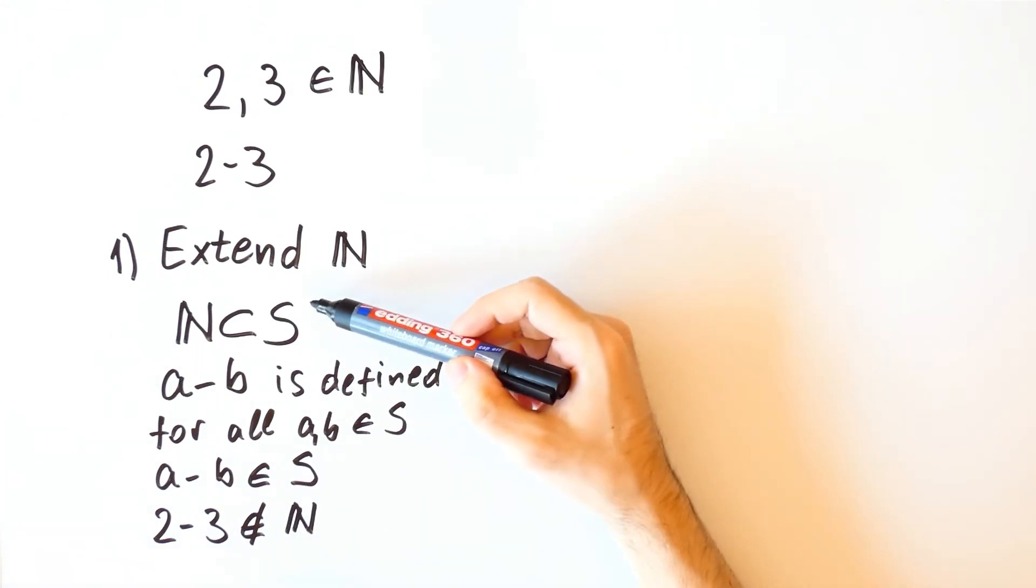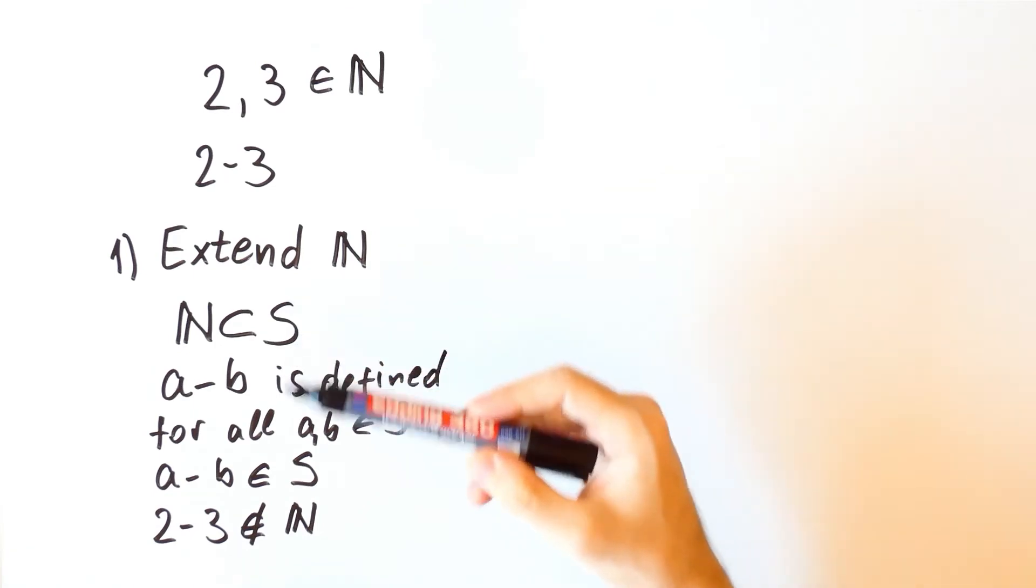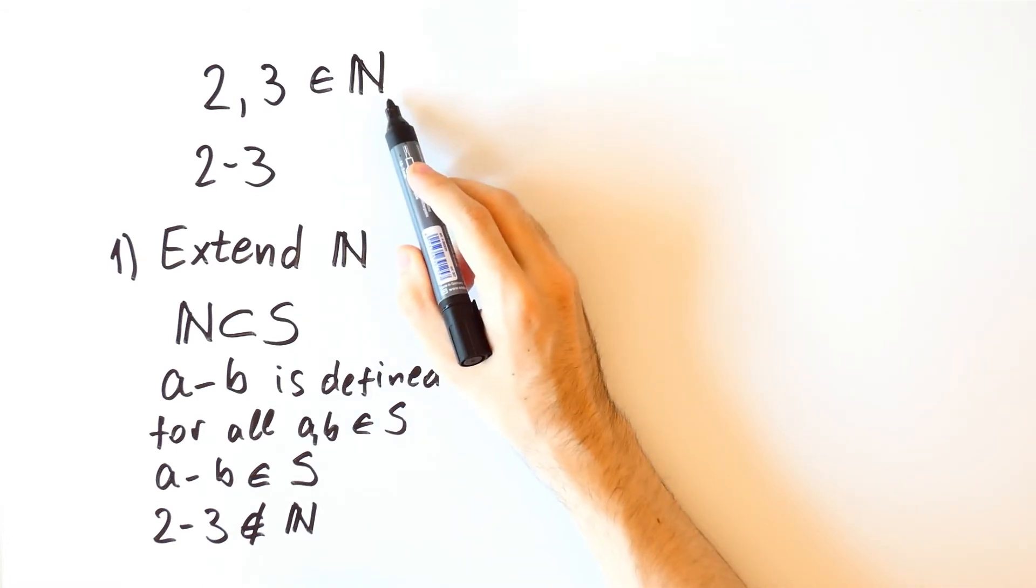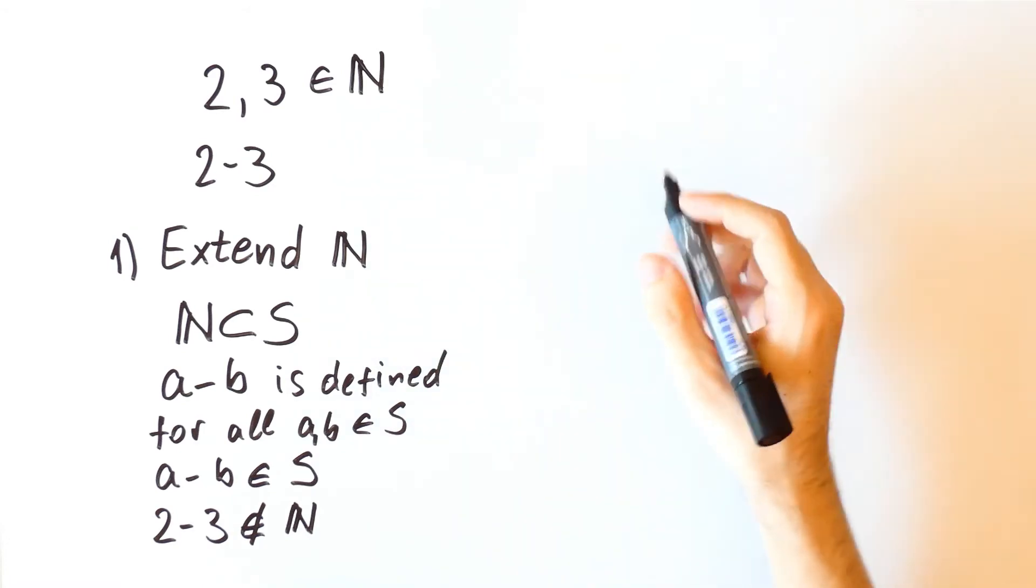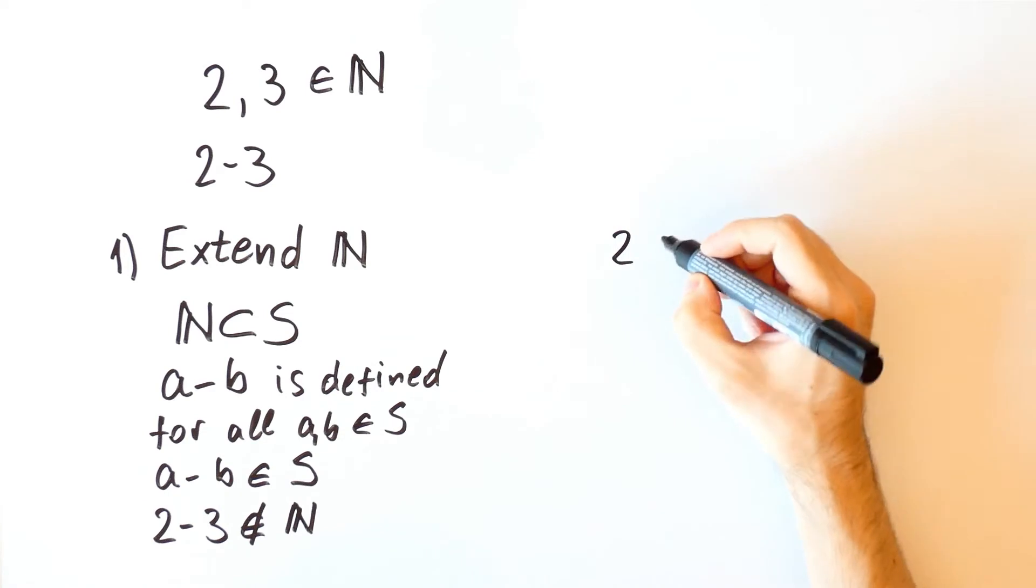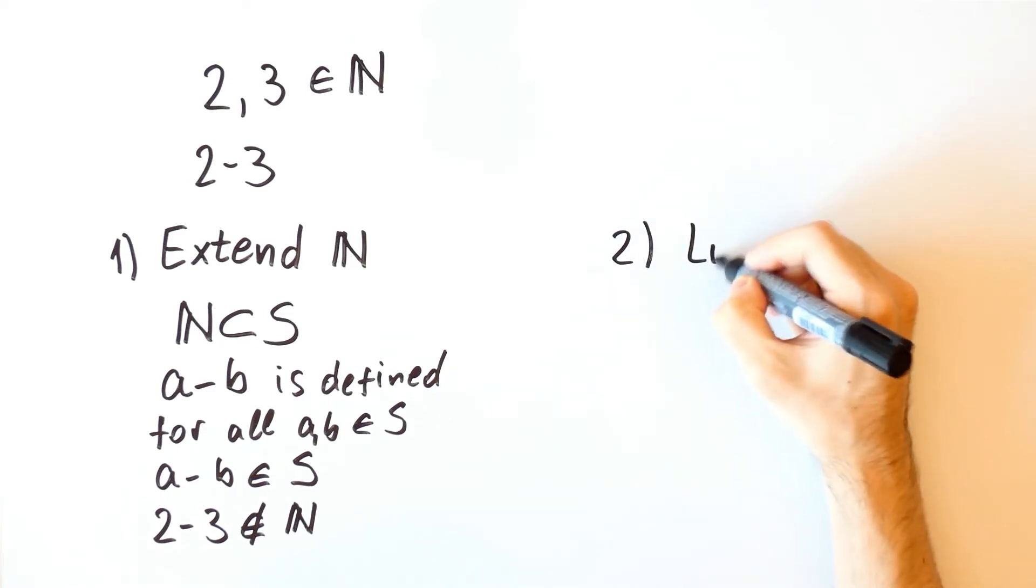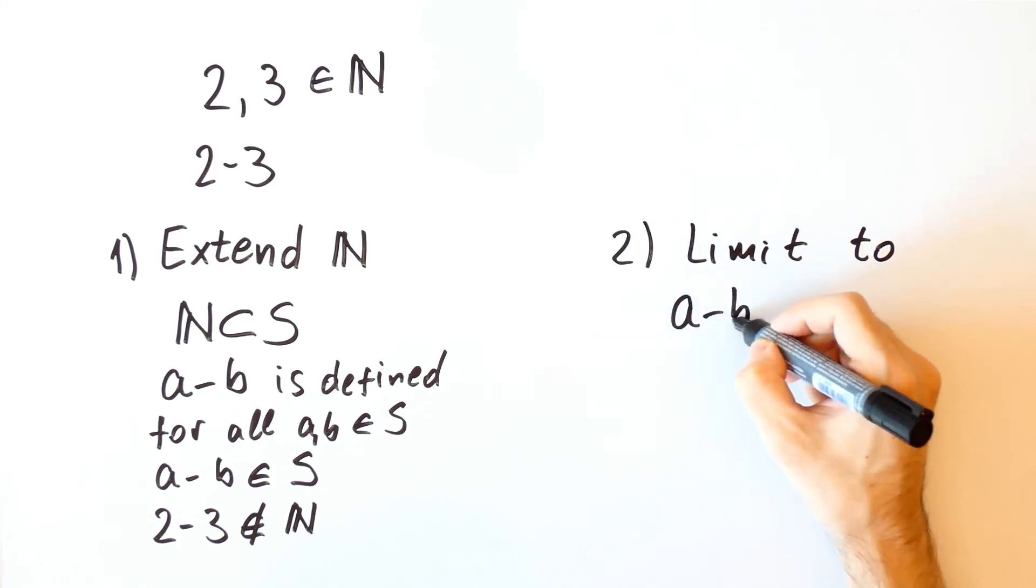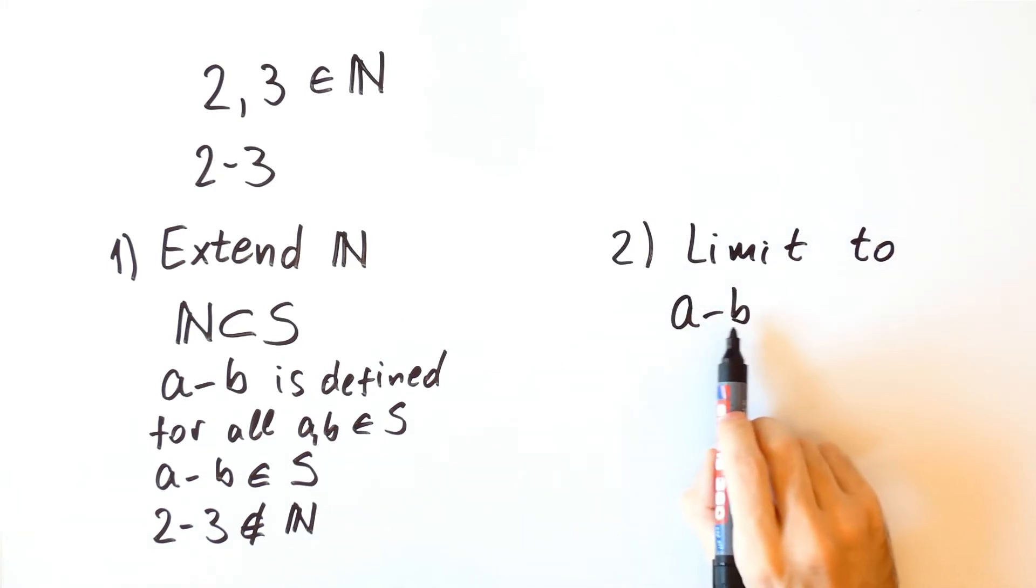So, one option is to find a new set on which subtraction is an operation. However, if we want to stay in the set of natural numbers, then we would have to limit ourselves to differences a minus b such that a is greater than b.